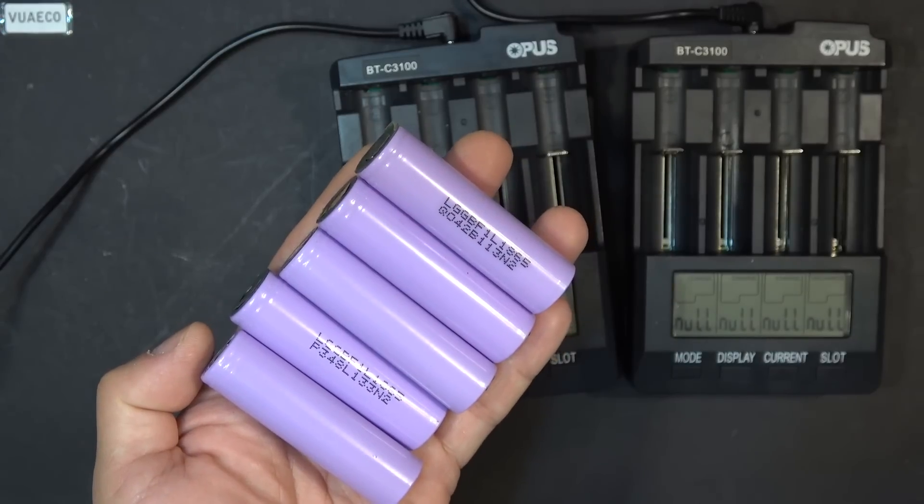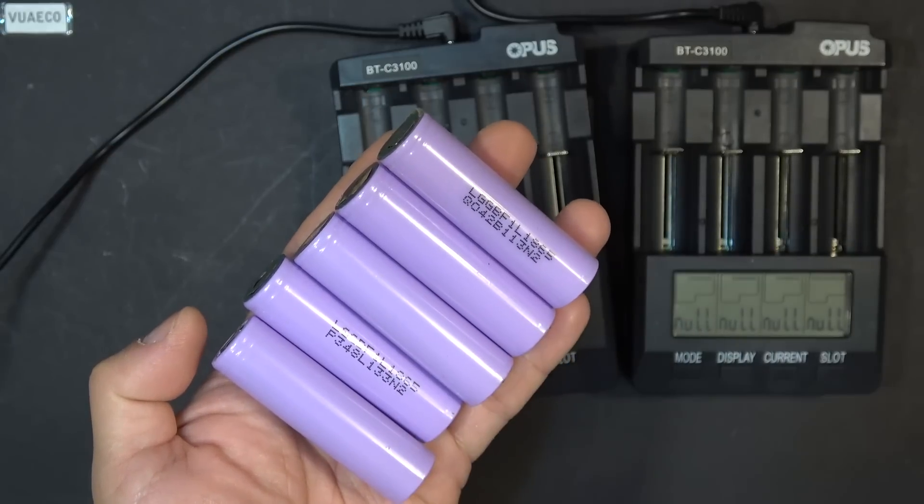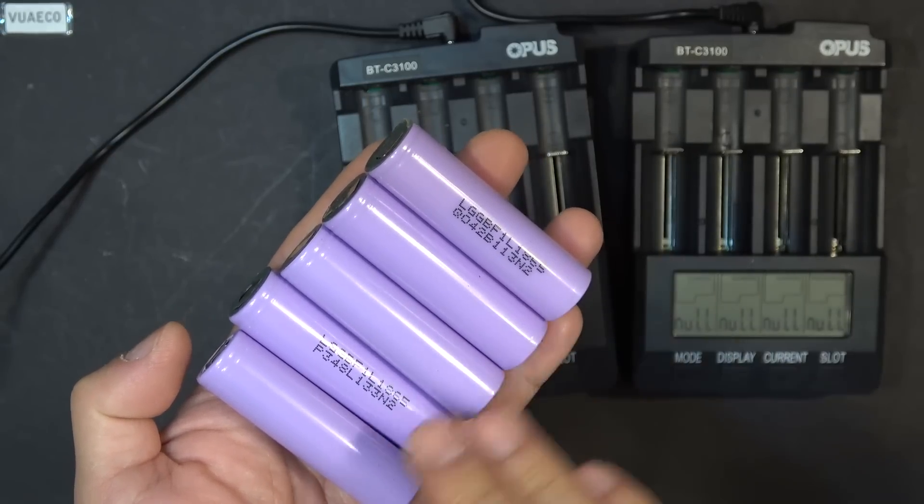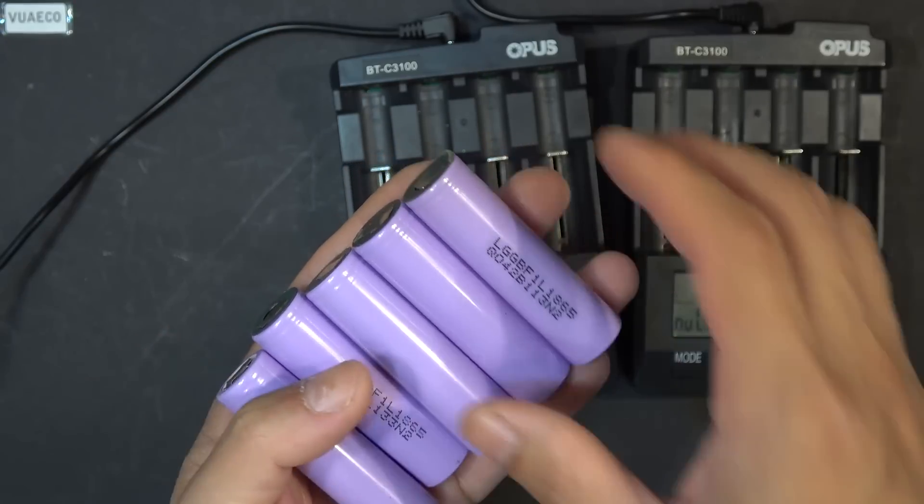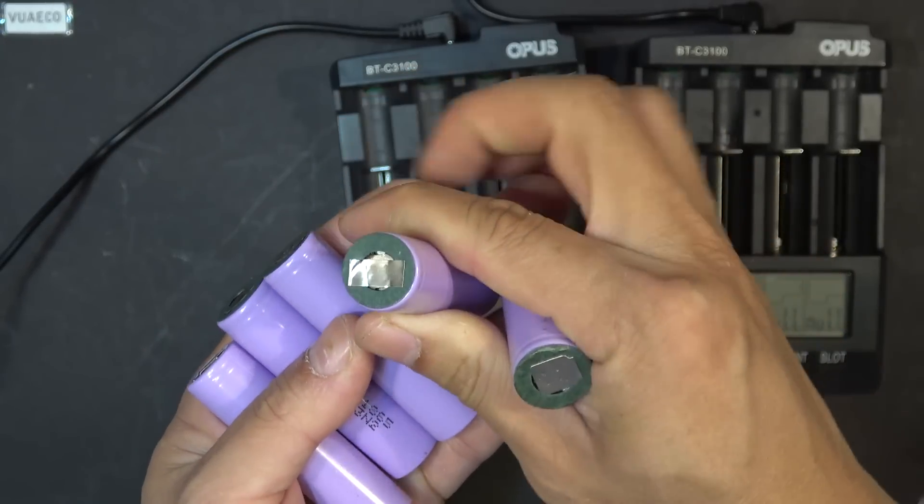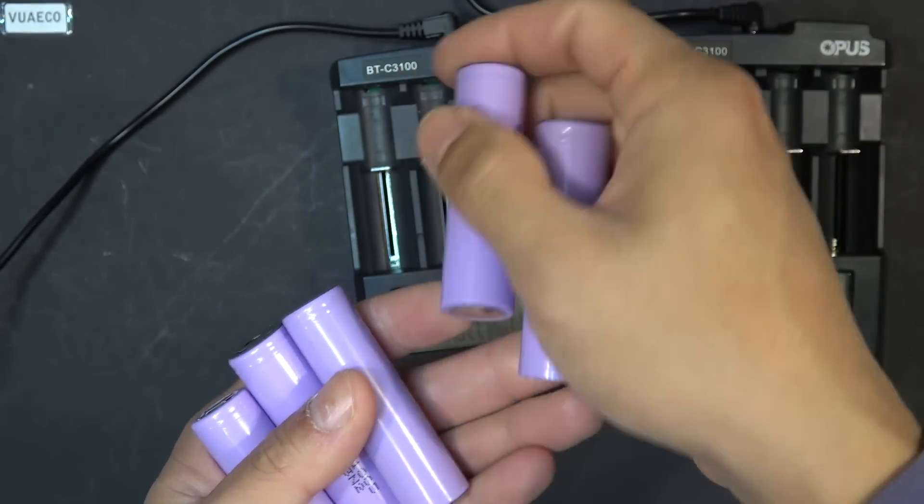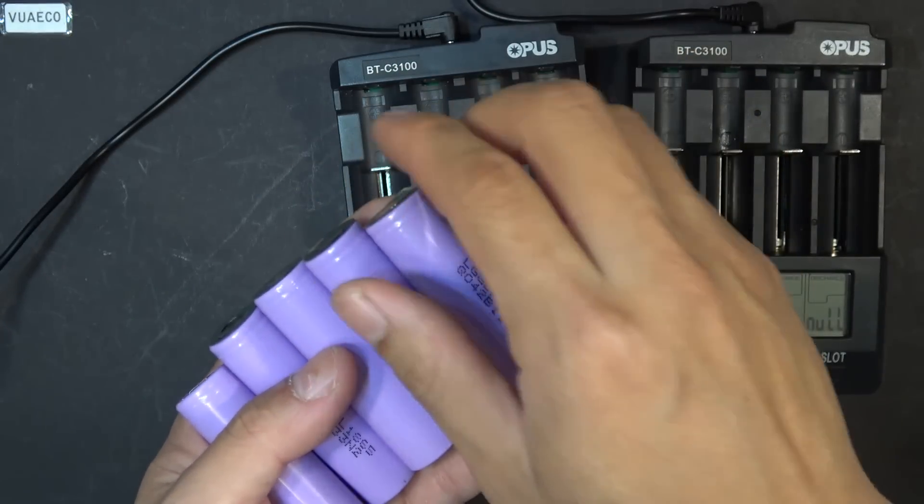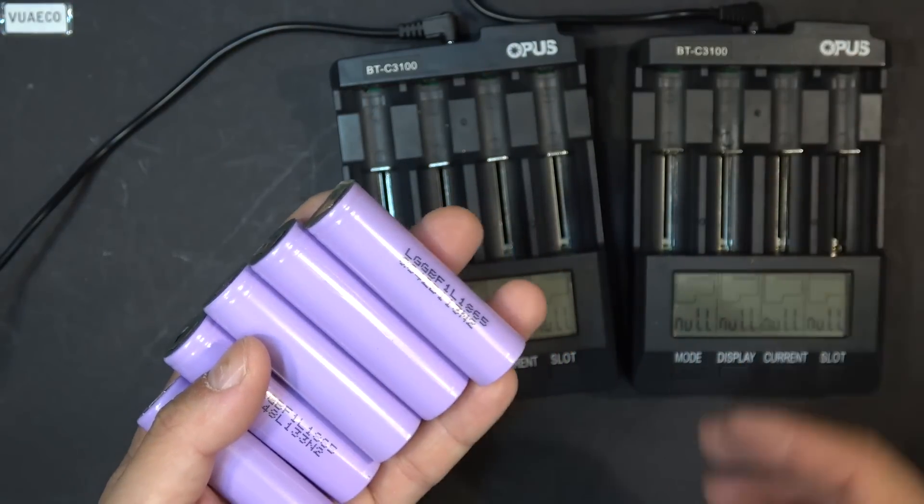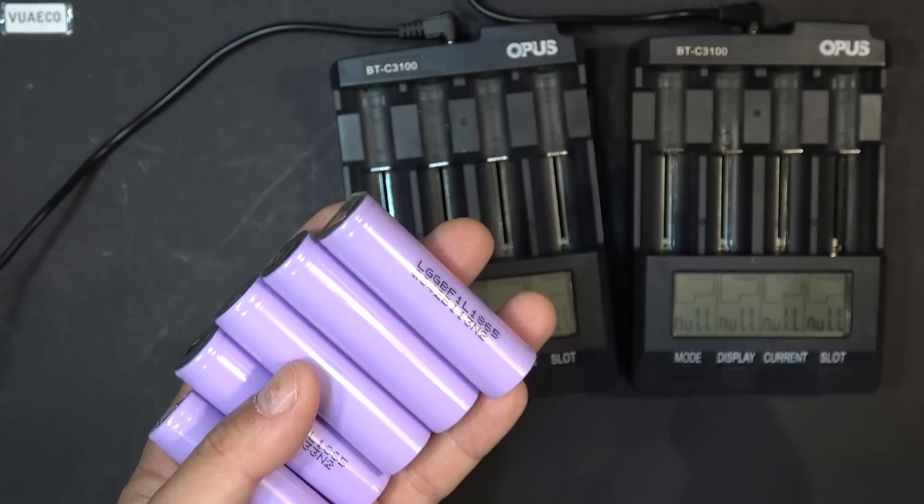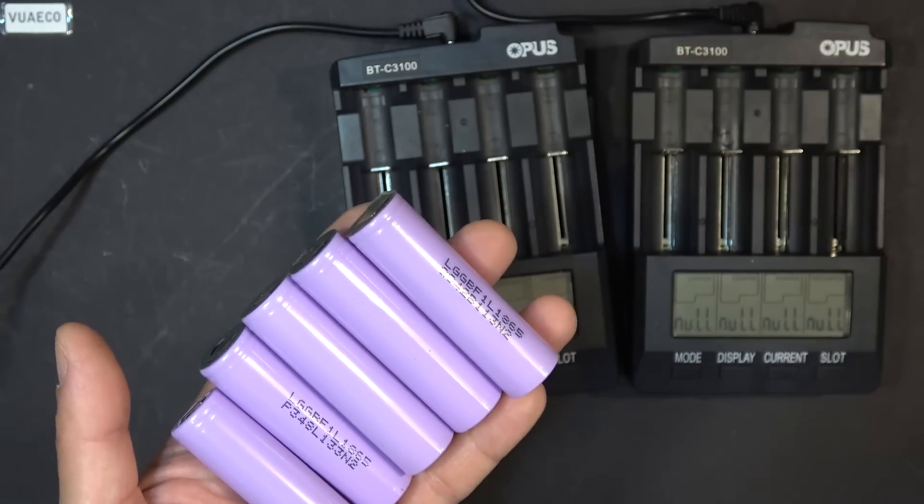So in this test I'm going to use these LG 3350 mAh cells. These cells are brand new, and they are all the same model and the same condition. You can see they have some nickel strips still on the terminal because I salvaged them from a USB power bank. But the power bank was brand new, so they are basically brand new cells.